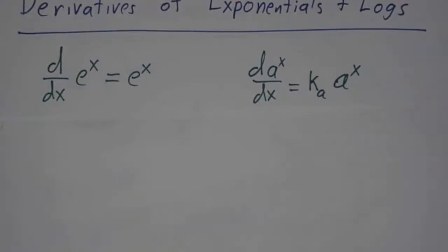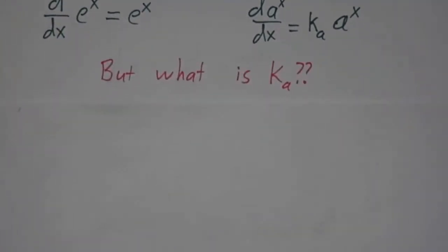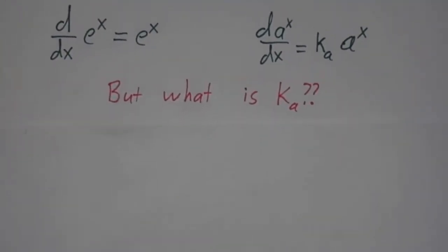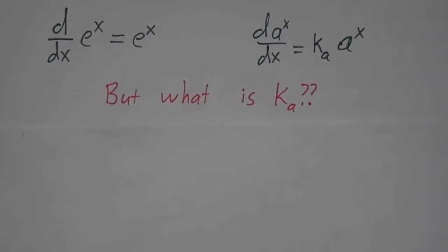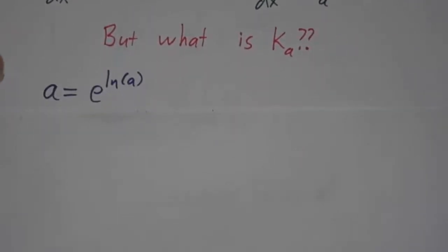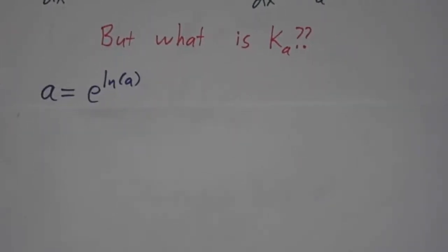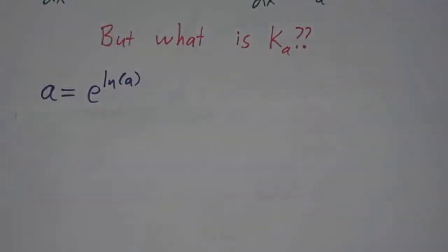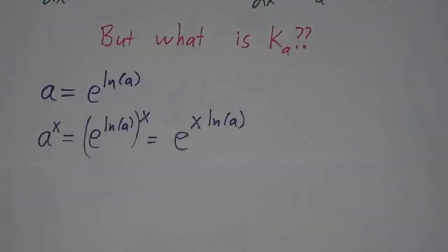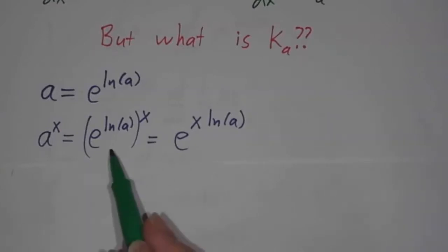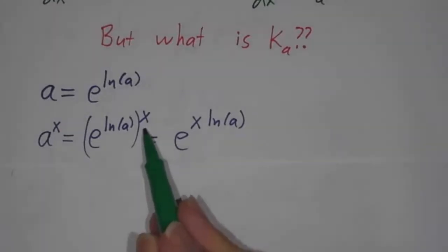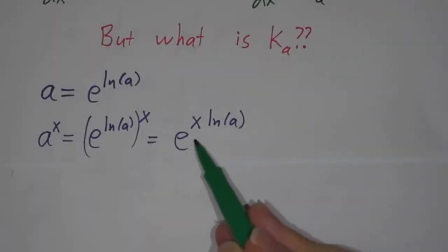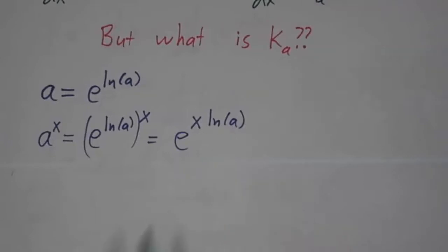The question is: what is this? Can we understand what this crazy constant is? And in fact, we can. We can write a as e to the natural log of a. That means that a to the x is e to the natural log of a to the x, so that's e to the x times the natural log of a.